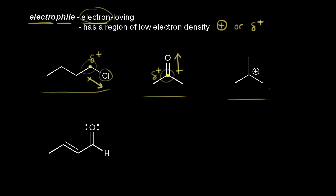Next let's look at a carbocation, where there's a full positive charge on this carbon. This carbon has only three bonds to it, which gives it a full positive charge. Obviously a full positive charge is going to love electrons — opposite charges attract. So this carbon is the electrophilic portion of this ion.